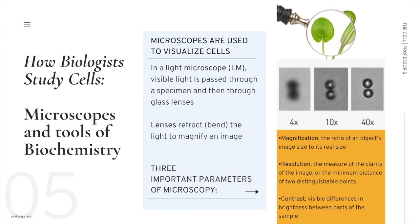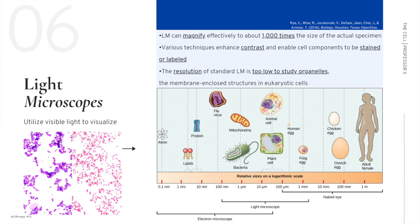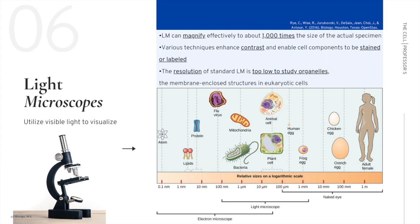Light microscopes can magnify effectively to about 1,000 times the actual size of the specimen. We can further increase the visibility of the specimen by using different lab techniques, such as enabling cell components to be stained or labeled, which may greatly increase contrast. For example, there are gram stains used to distinguish different species of bacteria — gram positive is purple and gram negative is pink. Light microscopes also allow for viewing live specimens; for example, you can collect some pond water, make a wet slide, and see microscopic life swimming around.